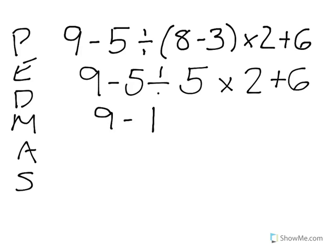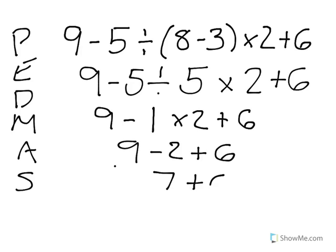So now we have 9 minus 1 times 2 plus 6. And now we're going to multiply. So that's 2. So now we have 9 minus 2 plus 6. Now we go from left to right with addition and subtraction. 9 minus 2 is 7 plus 6. And that gives us the answer of 13.